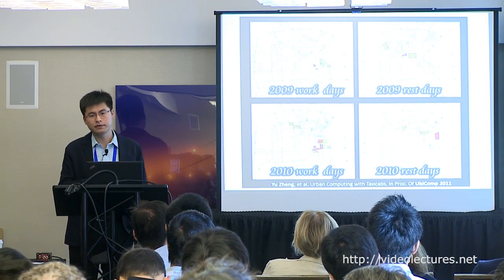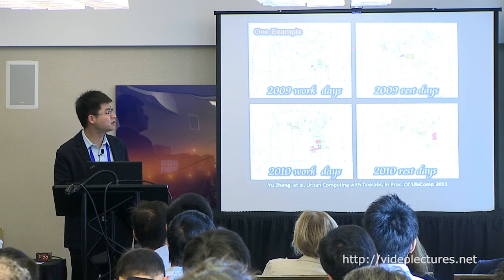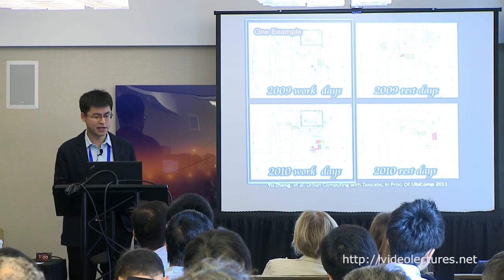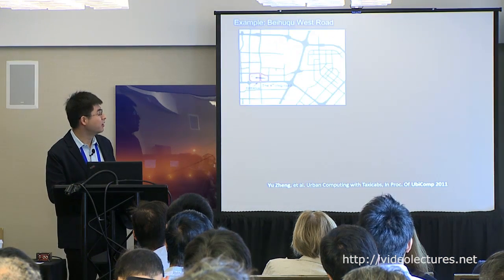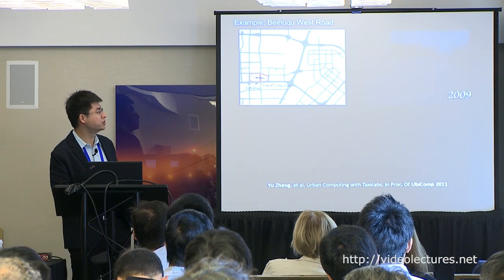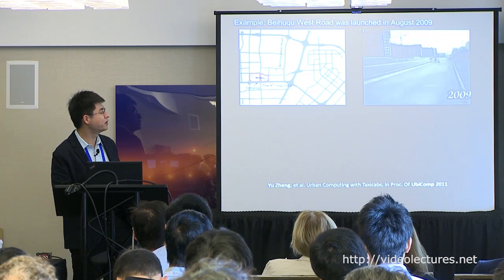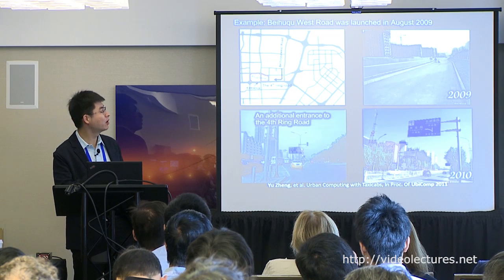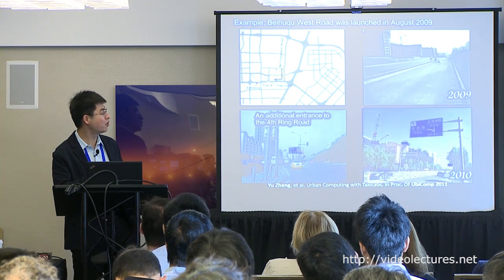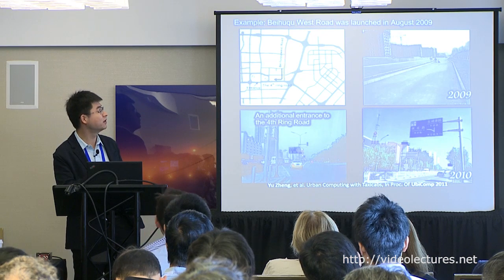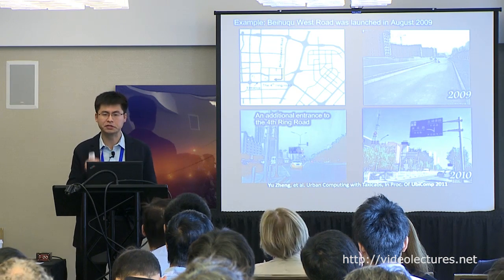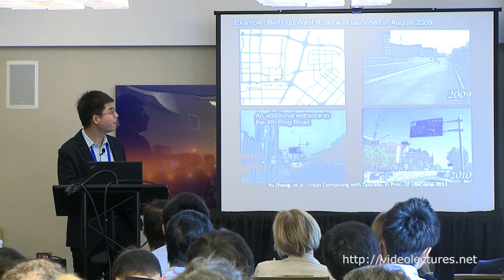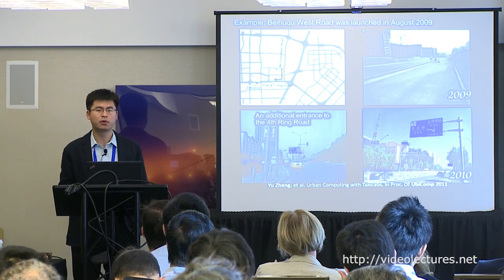To evaluate, we compare results from two consecutive years and check whether changes make sense. For instance, there was a bottleneck between two regions because many vehicles entered a fourth region through those two regions. Later, a road was upgraded, giving people an additional path into the fourth region — and the problem disappeared. This confirms that the road upgrade really solved the problem.